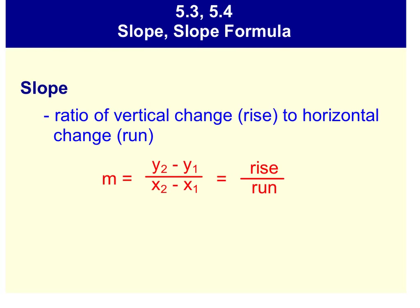All right, we can move on to slope and our slope formula. So slope is a ratio, that's why it looks like a fraction, of vertical change, the rise, to horizontal change, the run. We have two ways to find slope. You've got a slope formula, y2 minus y1 over x2 minus x1, and you also have rise over run.